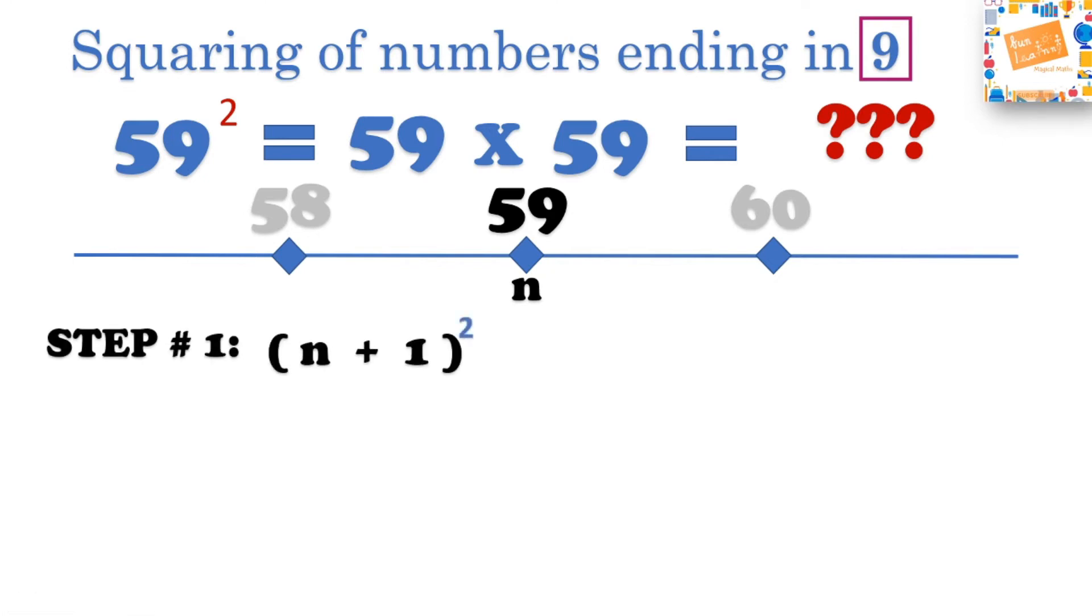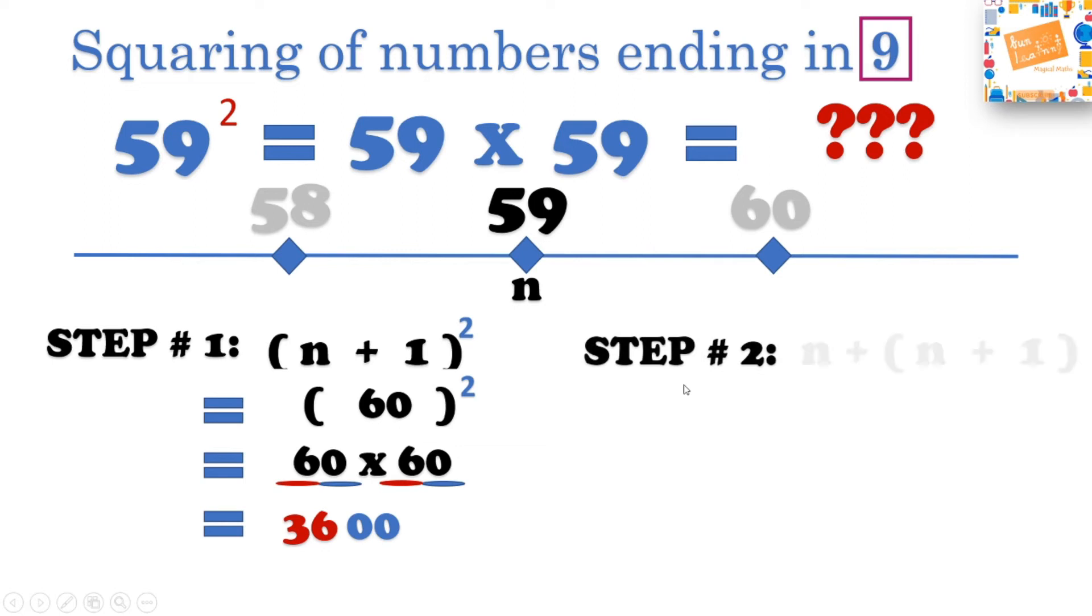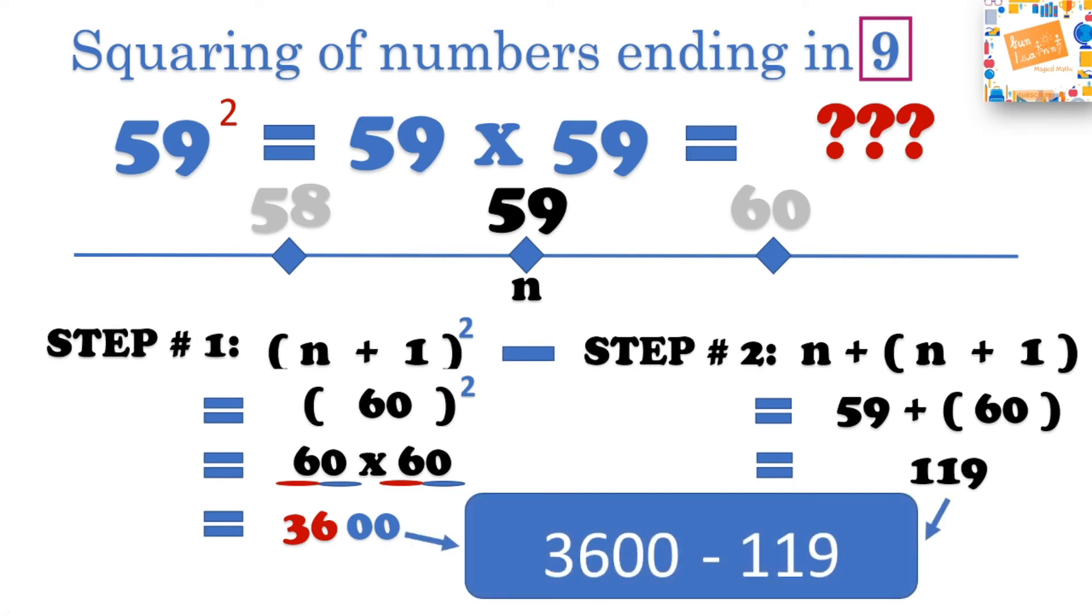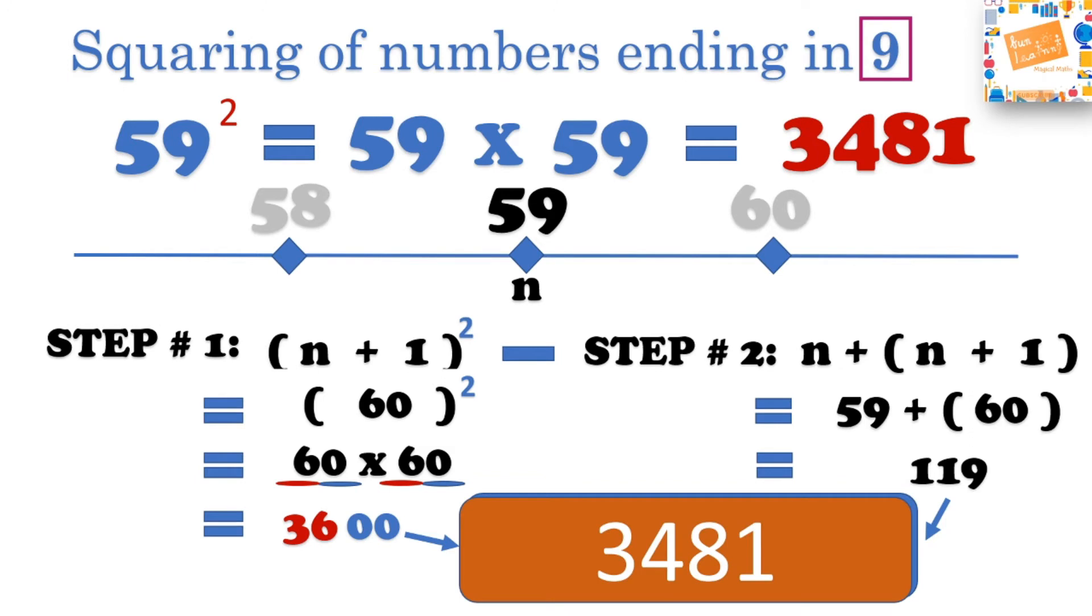Let's do step 1, which is n plus 1 square, that is equal to 60 square, which is nothing but 60 times 60. All you need to do is add the two zeros as there are two zeros multiplied, and then get 6 square or multiply 6 times 6, which is 36, which is our step 1 answer. For step 2, we need to add 59 and the number after 59 together, that is n plus n plus 1, which is equal to 59 plus 60, which is 119. Now all you need to do is subtract step 2 from step 1, which is 3600 minus 119, which gives us the answer of 3481.